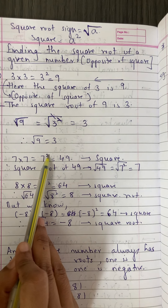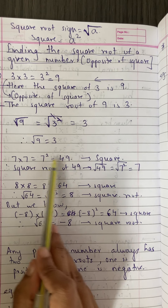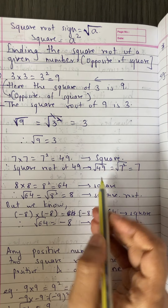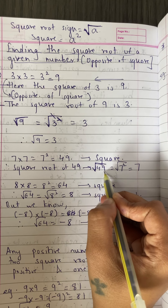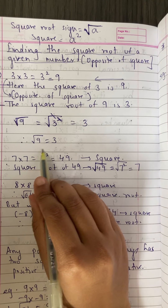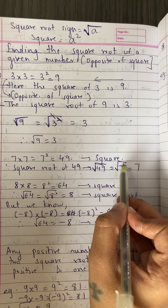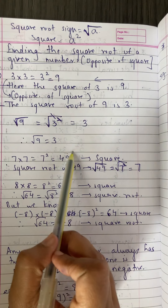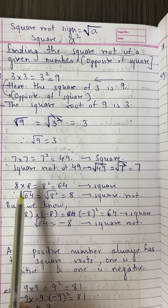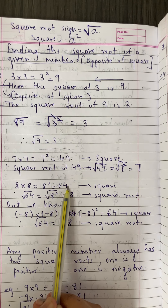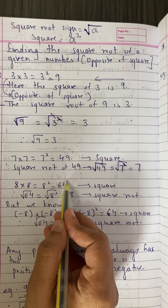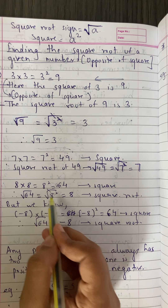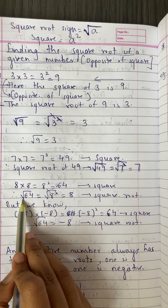Since 7 into 7 is 49, that means 7 squared equals 49. Now taking the square root of 49: we replace 49 with 7 squared, the square root and square cancel, and only 7 is left. So square root of 49 is 7. Similarly, 8 into 8 is 64, so square root of 64 is 8.